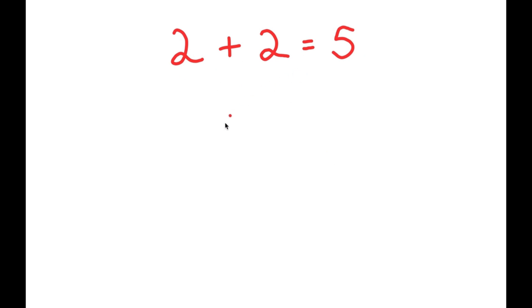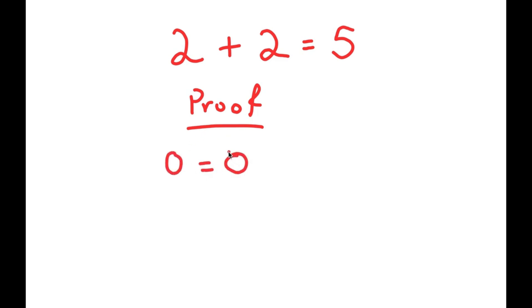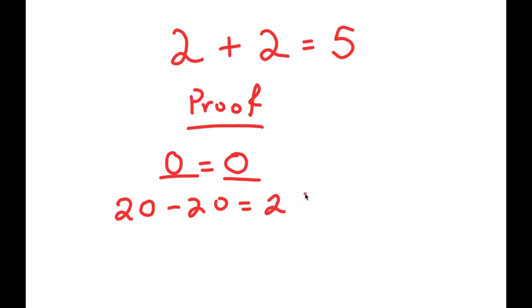To do this proof, I'm first going to start with a true statement: 0 is equal to 0, which is obviously true because any number equals itself. From here, I'm going to rewrite 0 on my left-hand side as 20 minus 20, and rewrite the 0 on my right-hand side as 25 minus 25. So now I get 20 minus 20 is equal to 25 minus 25 — again a true statement because both sides equal 0.